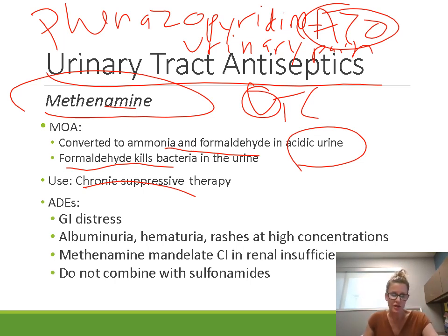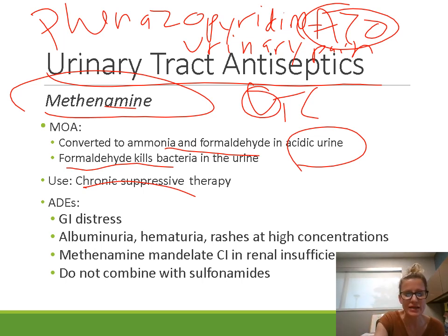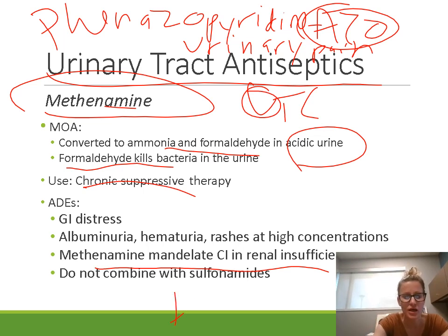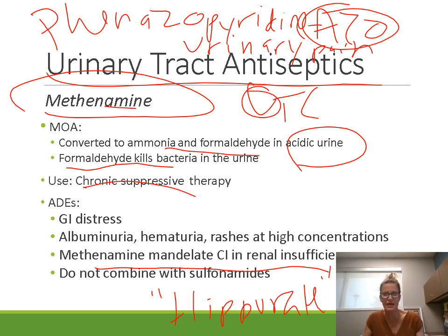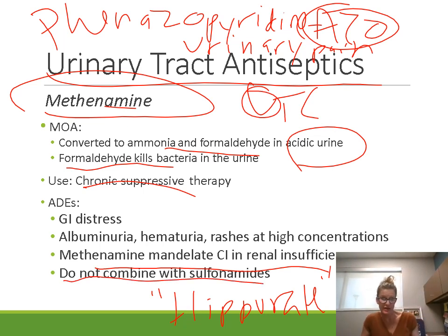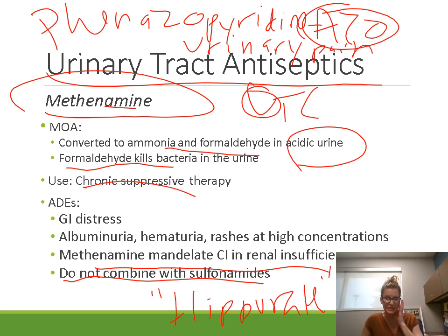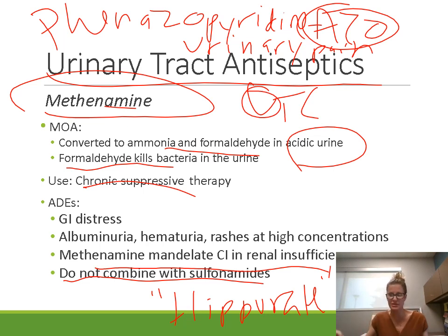Adverse effects of methenamine include GI distress (most common), and at high concentrations, albuminuria, hematuria, and rashes. Methenamine mandelate is contraindicated in renal insufficiency, but methenamine hippurate can be used in renal insufficiency. Importantly, methenamine cannot be combined with sulfonamides — the sulfonamide reacts with the formaldehyde, increases the risk of crystal formation, and decreases the effectiveness of the sulfonamide.